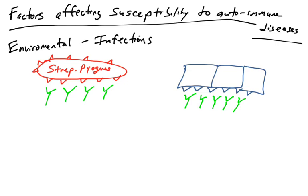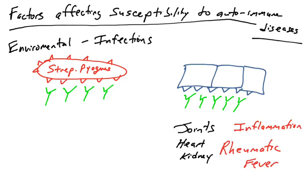It is known that some streptococcal infections can result in what's called rheumatic fever. This involves having a normal bacterial infection, fighting that infection, and then those antibodies being cross-reactive with host molecules found in heart tissue, kidney tissue, and in the joints. These antibodies, generated to recognize the pathogen, now recognize molecules in these tissues. When the antibodies bind autoantigens in these tissues, they induce complement activation, inflammation, and opsonization.